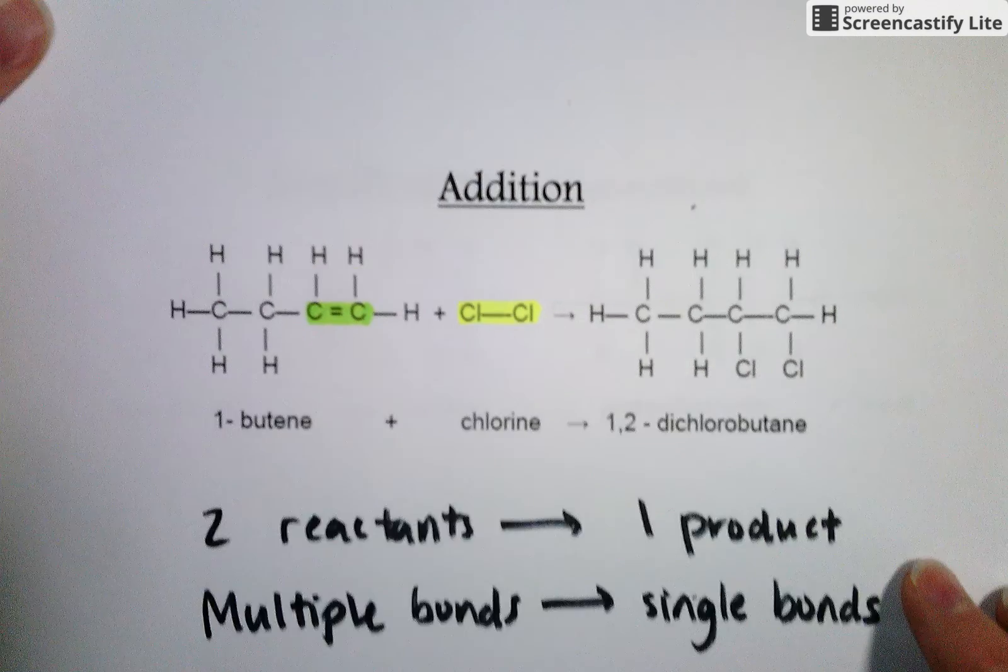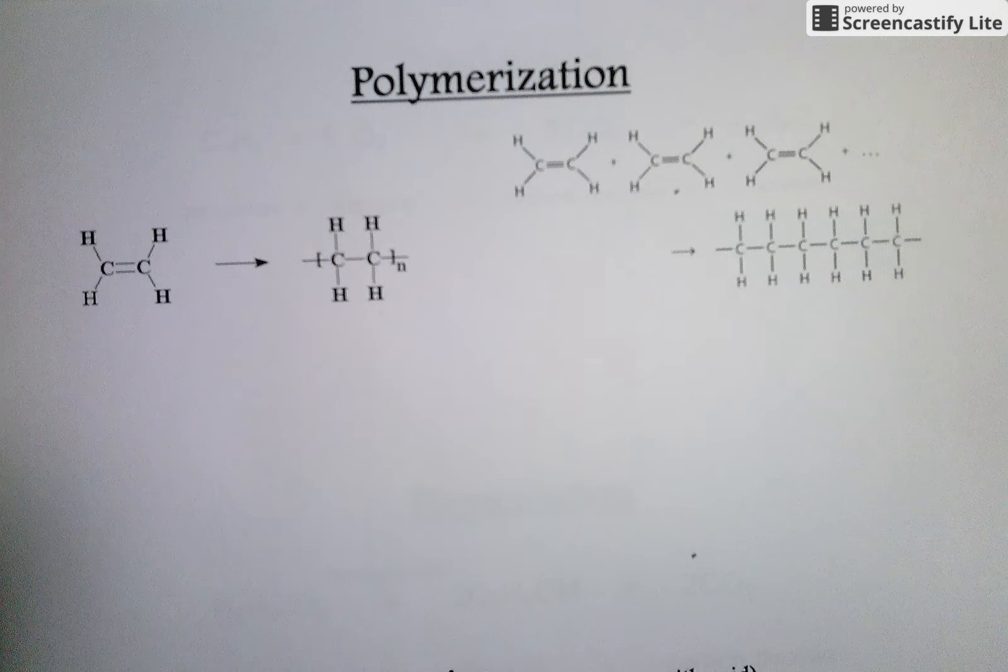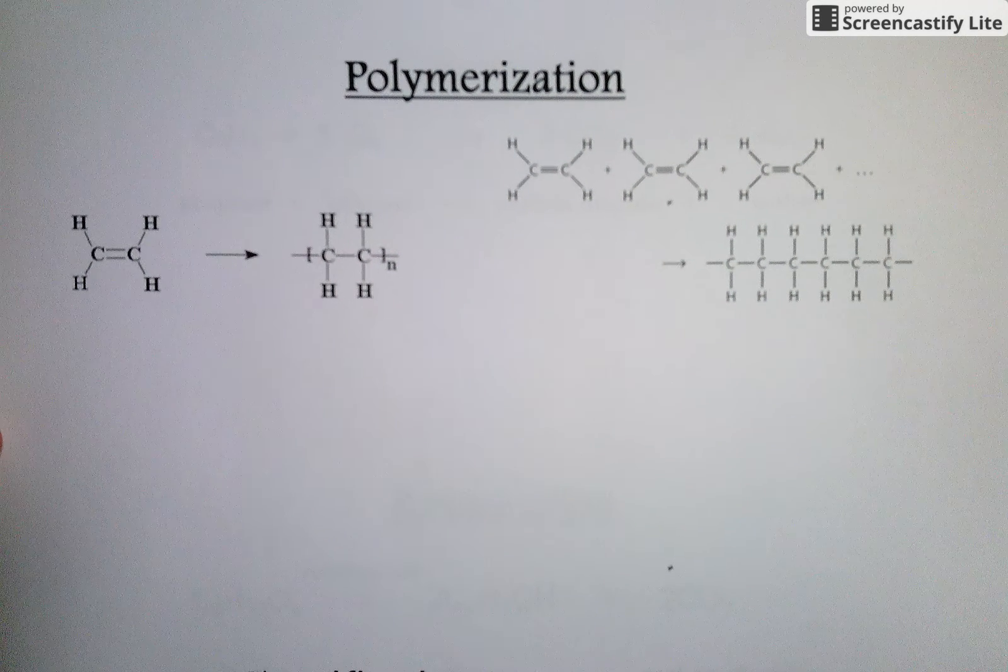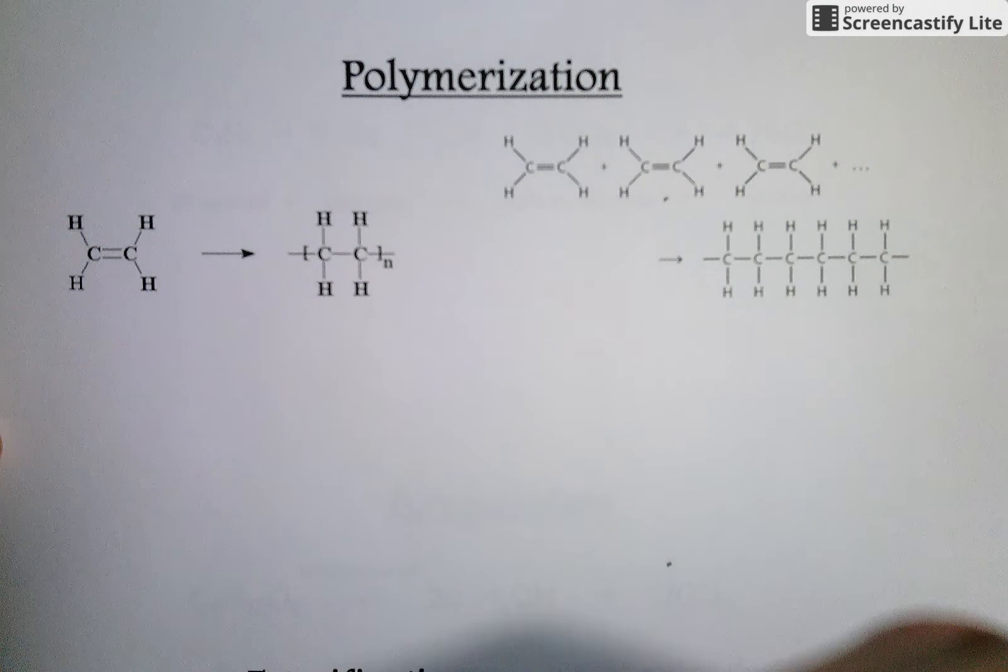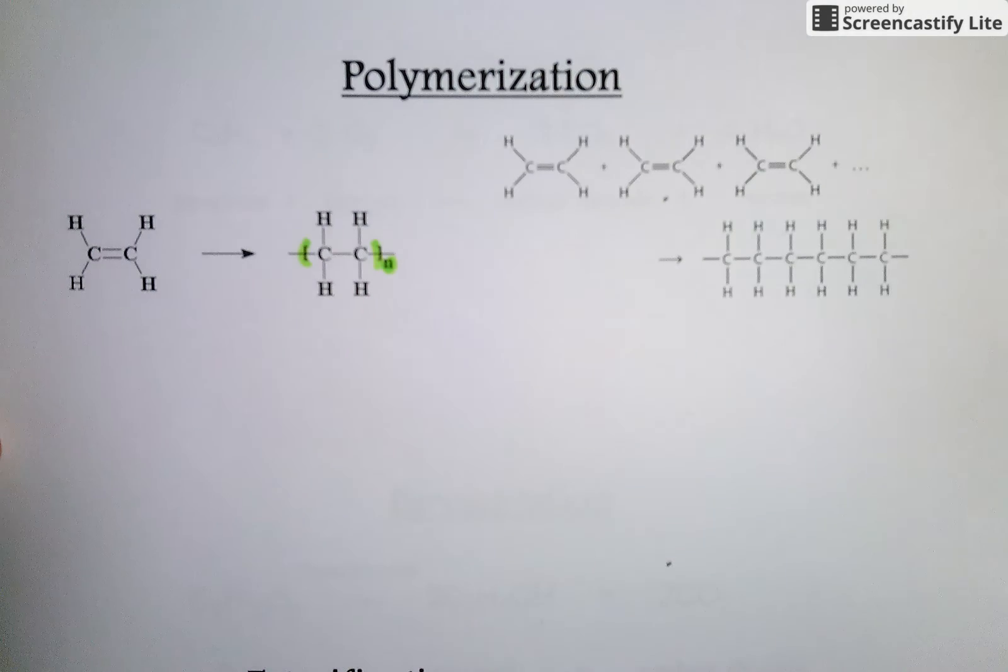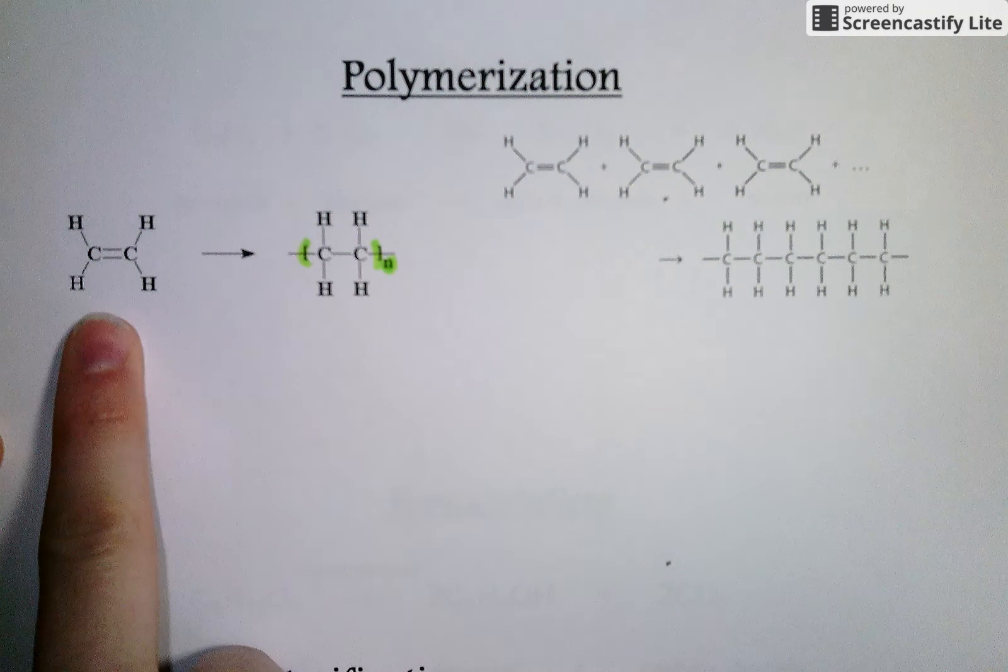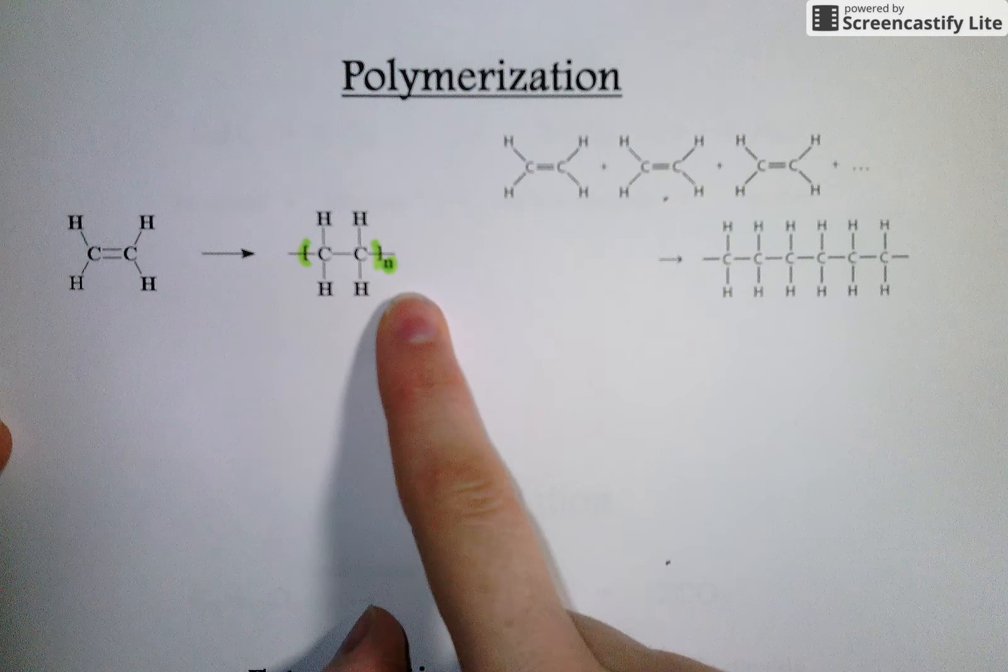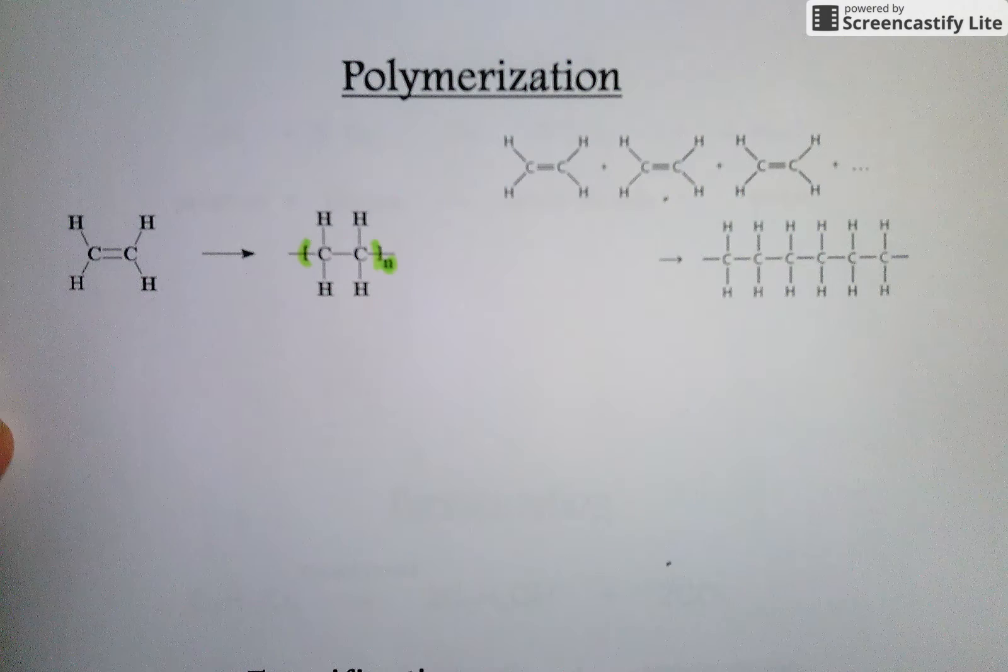The third reaction type that we're going to talk about is polymerization. Polymerization is somewhat similar to addition but just on a much larger scale. So you may see polymerization represented using these brackets with the letter N. And what that means is we've taken our initial molecule and stuck it together so many times that we don't even really feel like counting how many times that we've put it together. N can be upwards of like 200, 1,000, really huge numbers.